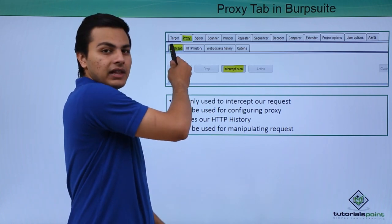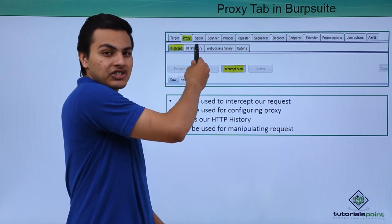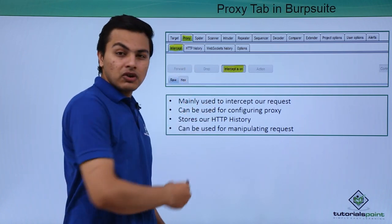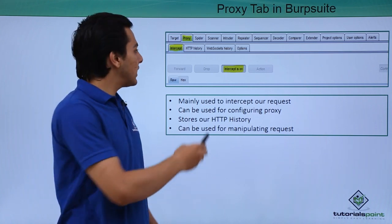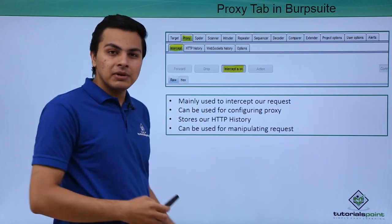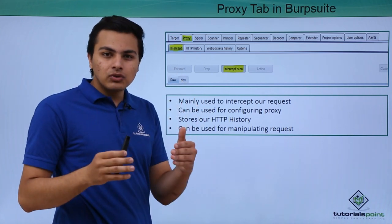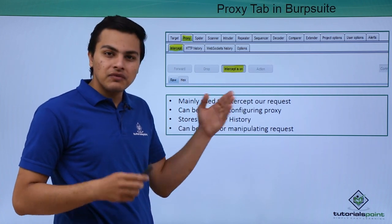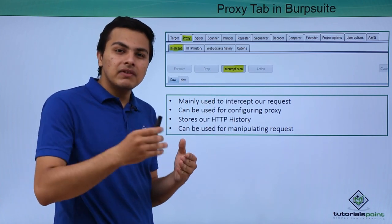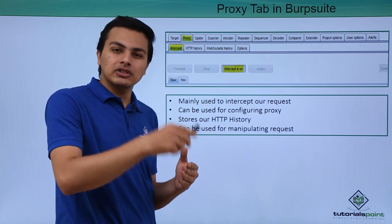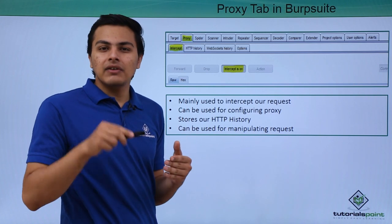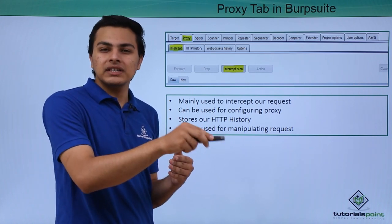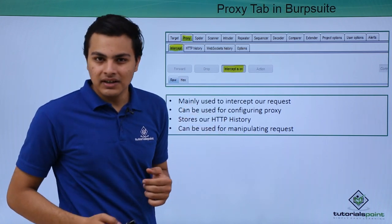The Proxy tab has several different sub-tabs: Intercept, HTTP History, Options, and WebSocket History. With the help of the Intercept tab we can check whether our intercept is on or off. If intercept is on, we will intercept our request; if intercept is off, the request will go directly to the web server without going through BurpSuite.